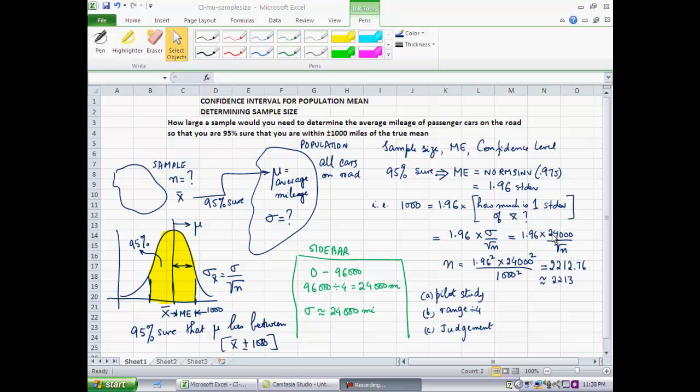With that approximation, I'll plug it back in. My 1,000 miles margin of error is 1.96 standard deviations. It equals 1.96 multiplied by 24,000 divided by square root of n. If you flip around some numbers, take n over to the left side and square it, bring 1,000 over to the right-hand side and square that, you will find that n equals 1.96 squared multiplied by 24,000 squared divided by 1,000 squared. It ends up being roughly 2,213. That's the sample size I should use.